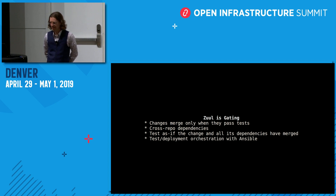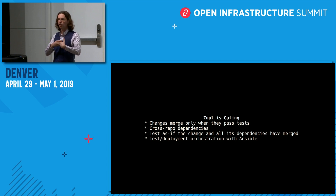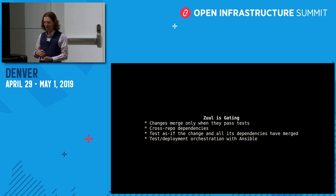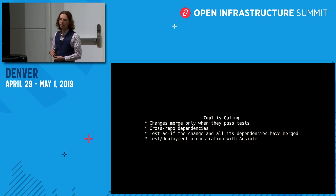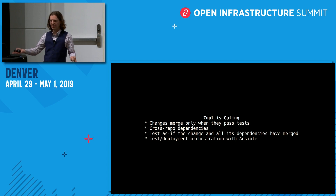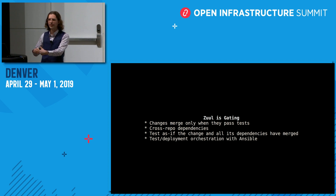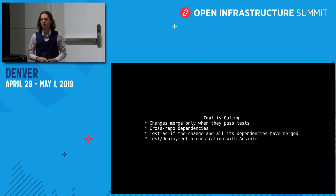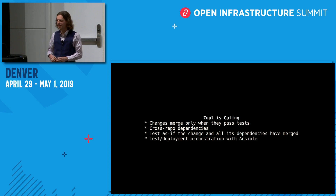It tests these changes as if they had all been merged. This is a really subtle — it almost sounds obvious — but it's a really subtle and important distinction. It means that we're not testing the change as the developer wrote it. We're testing the change and all of the changes that it depends on exactly as they're going to be when they land. So we know when they land it was tested correctly and they were all tested together.